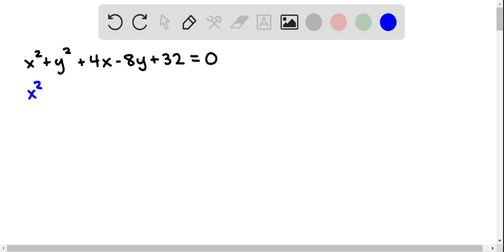So I'm going to rearrange the terms a little bit. We have x squared plus 4x plus some number that completes the square, plus y squared minus 8y plus some number that completes the square.